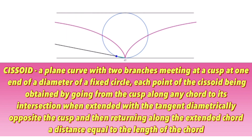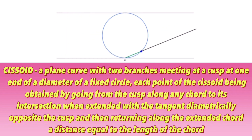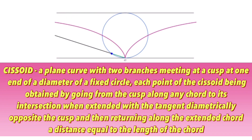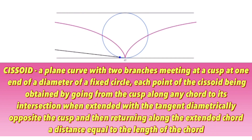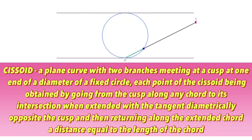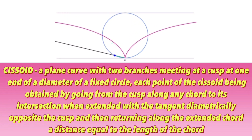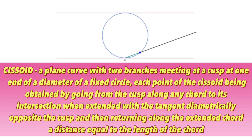In the video, you will see that the cissoid is colored red. Now let's go over the equation and the shape of a graph of a cissoid in both the Cartesian coordinate plane and in the polar coordinate plane.